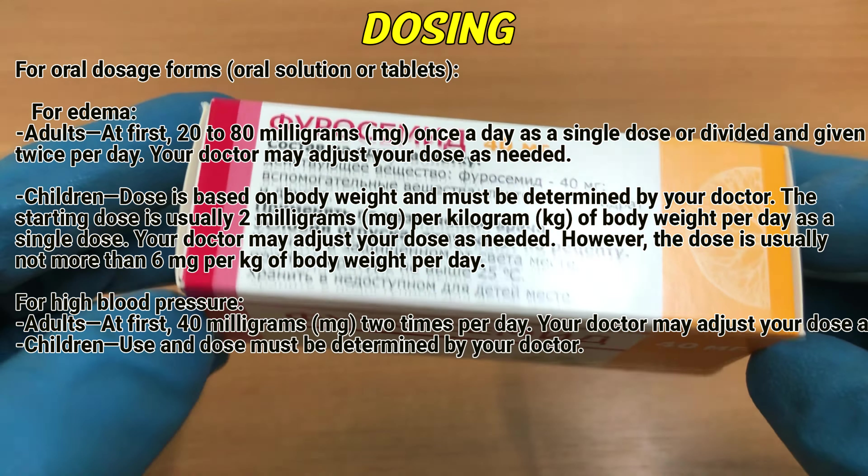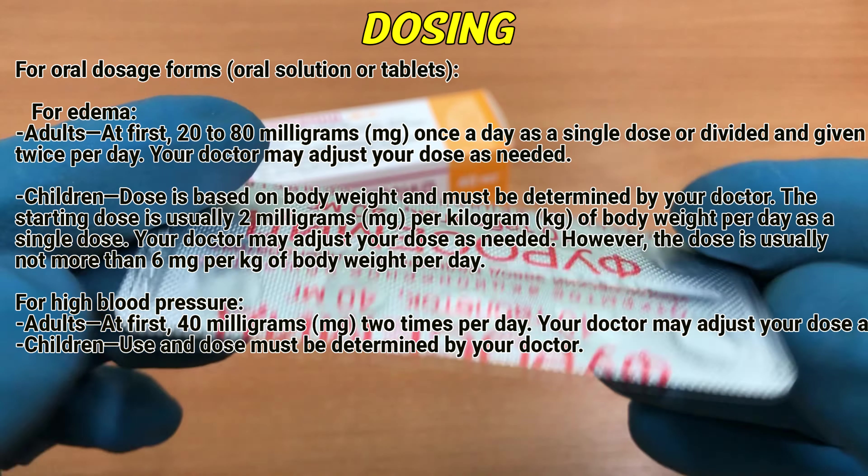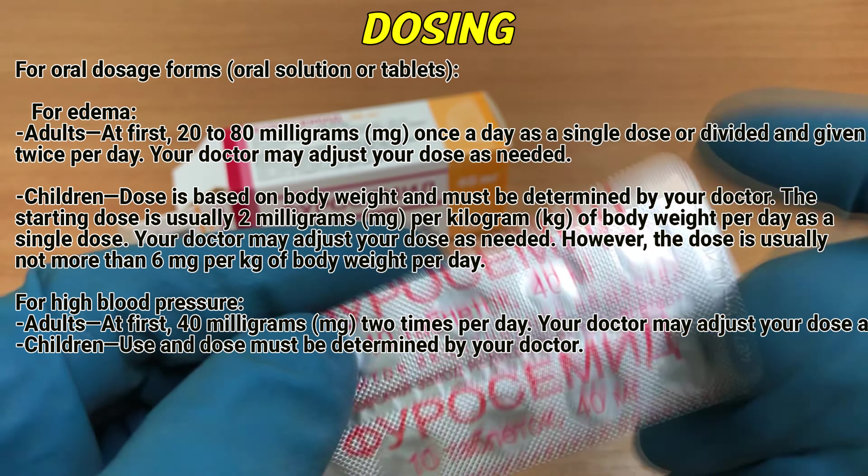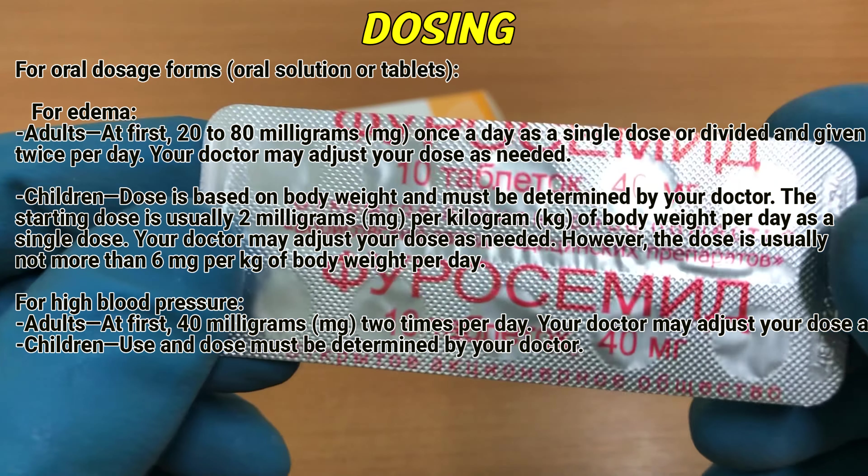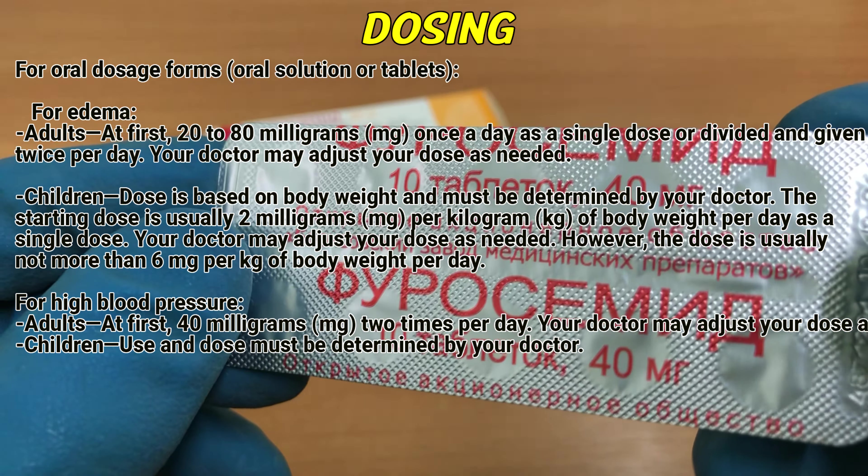For edema: Adults — at first 20 to 80 mg once a day as a single dose or divided and given twice per day. Your doctor may adjust your dose as needed. Children's dose is based on body weight and must be determined by your doctor. The starting dose is usually 2 mg per kg of body weight per day as a single dose. Your doctor may adjust your dose as needed. However, the dose is usually not more than 6 mg per kg of body weight per day.